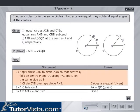Proof. Apply circle CYD to circle AXB so that the center Q falls on center P and QC along PA and D on the same side as B. Therefore, circle CYD overlaps circle AXB.